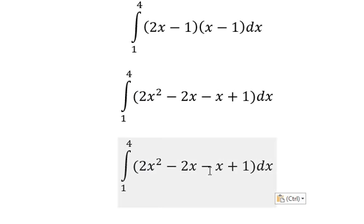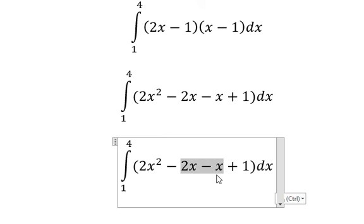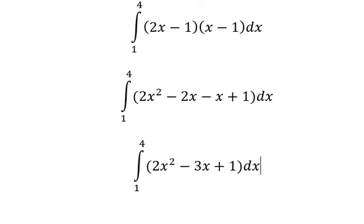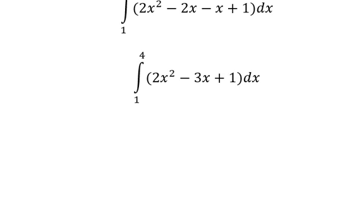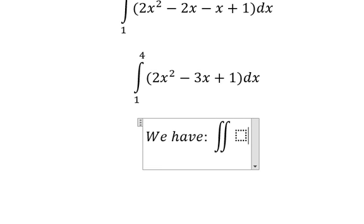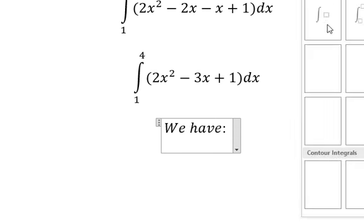Simplifying the terms, negative 2x minus x gives us negative 3x. So we get 2x² minus 3x plus 1. Next we have the formula for the integral.